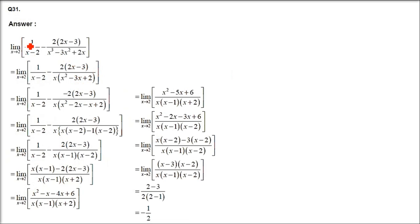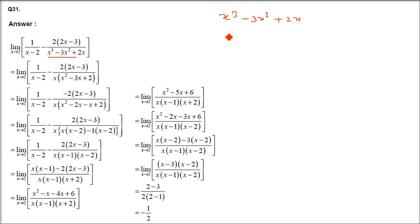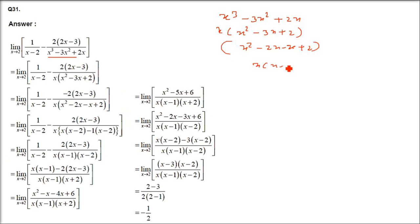Next, limit as x tends to 2: (1/(x-2)) - 2(2x-3)/(x³ - 3x² + 2x). Let me show how to factor the denominator. Factor out x: x(x² - 3x + 2). Then factor x² - 3x + 2 = (x-1)(x-2). So the denominator is x(x-1)(x-2). These are the factors to work with.